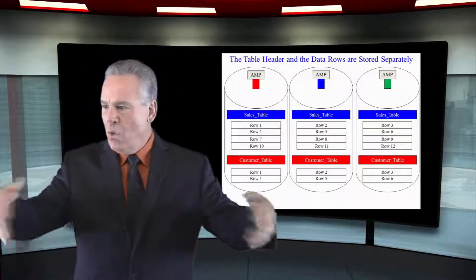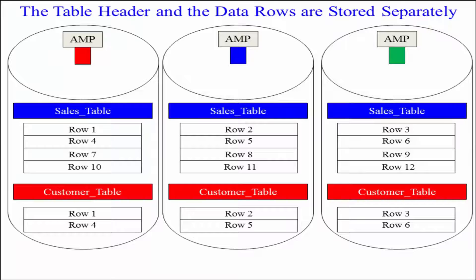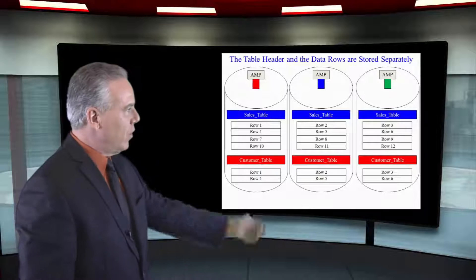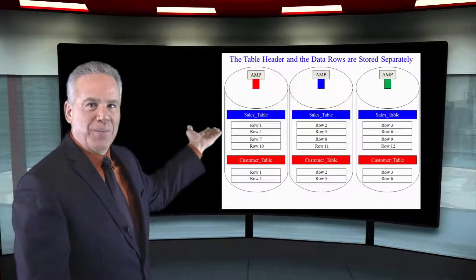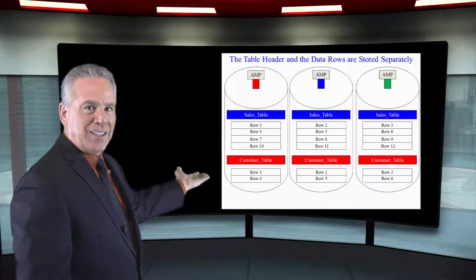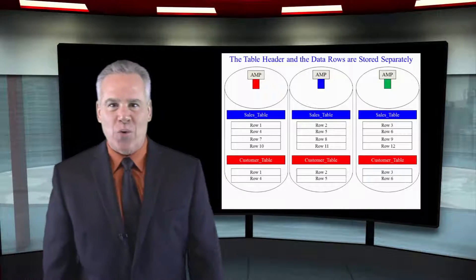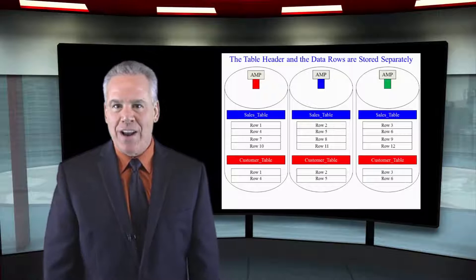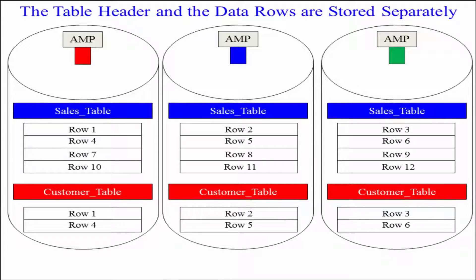Then when data is loaded, Teradata loads those in blocks on those AMPs. The table header and the data blocks are stored separately on every AMP. That's cold hard fact number two.